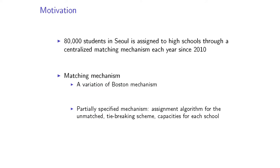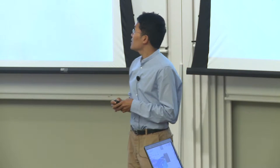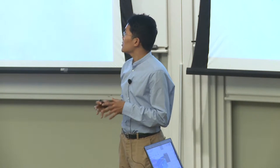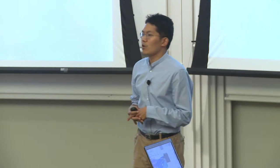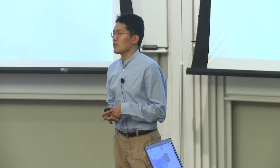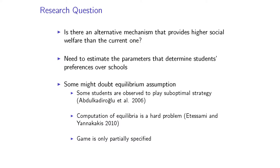This matching mechanism is a variation of the Boston mechanism. What is particular about this mechanism is that it is only partially specified. The aspects that are partially specified include the assignment algorithm for unmatched students, the tie-breaking scheme, and the exact capacities for each school. Even with this limitation, economists would still like to know what the social welfare outcome would be if we implemented a different matching mechanism with better theoretical properties.